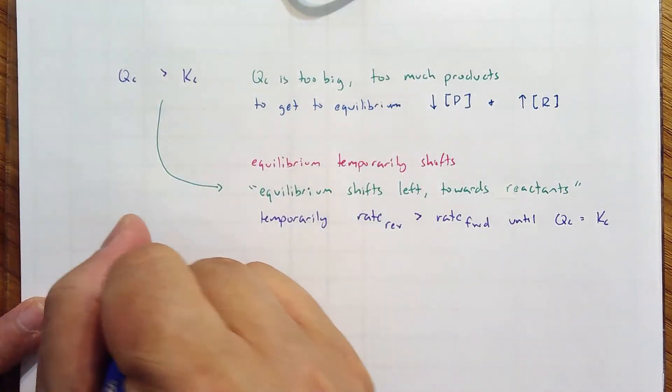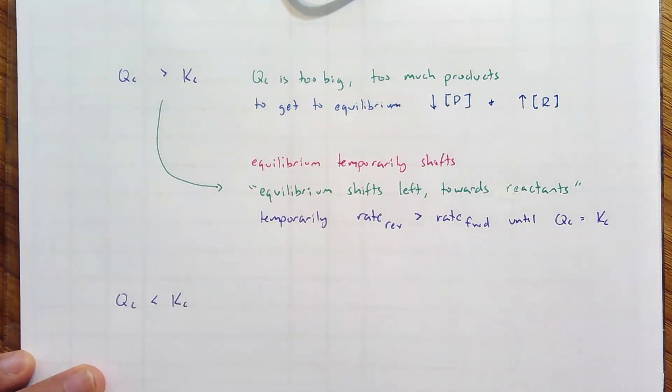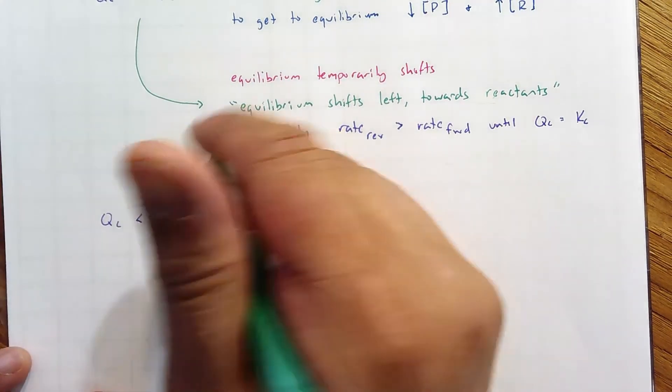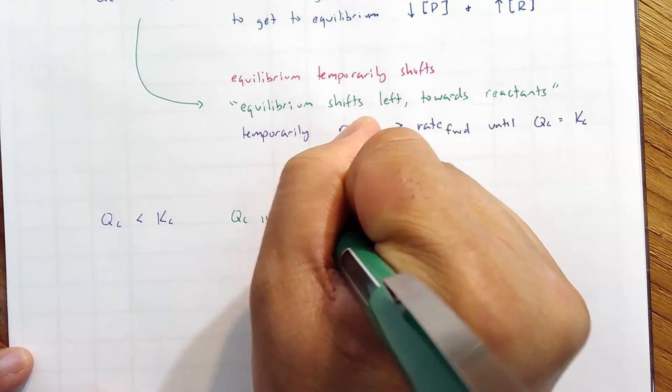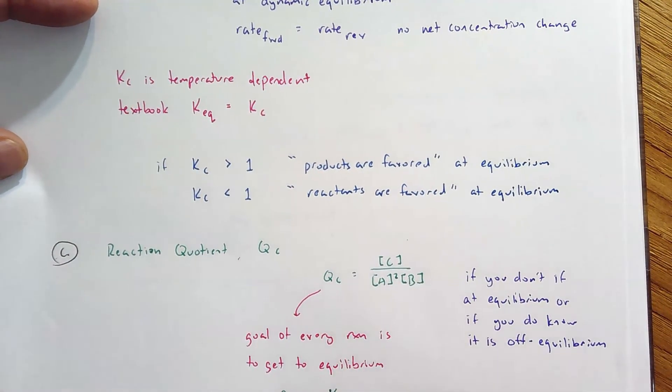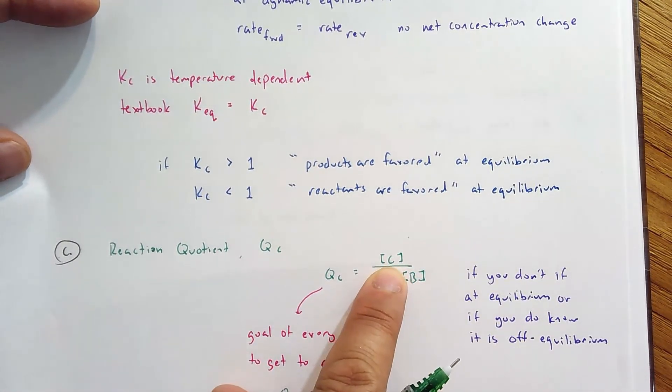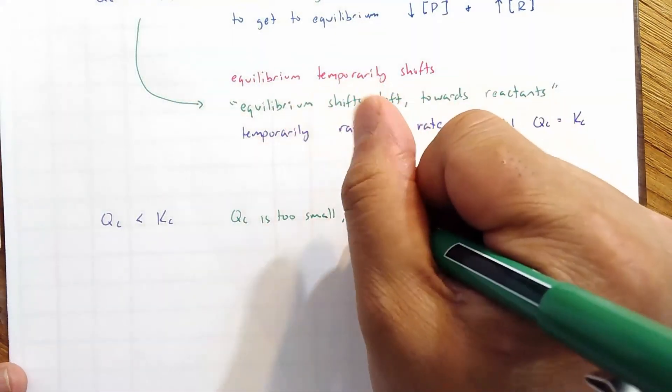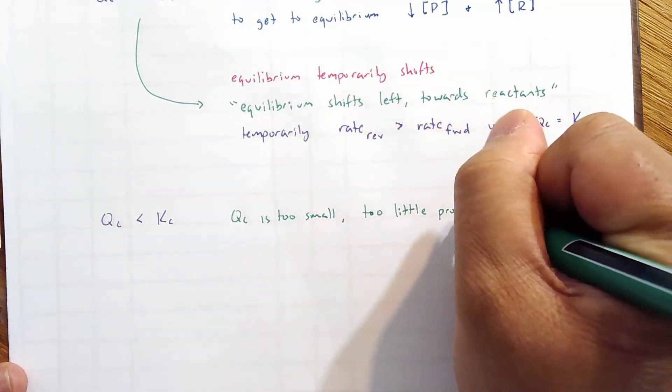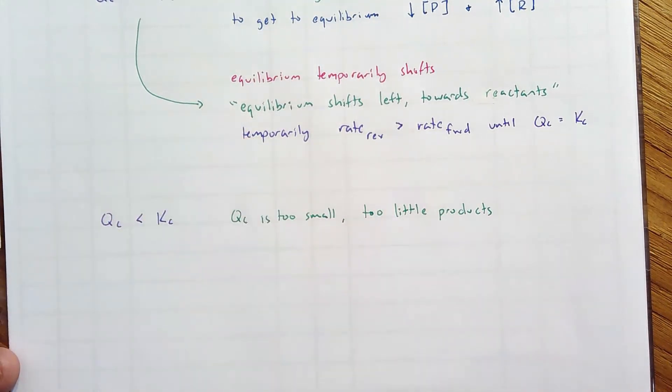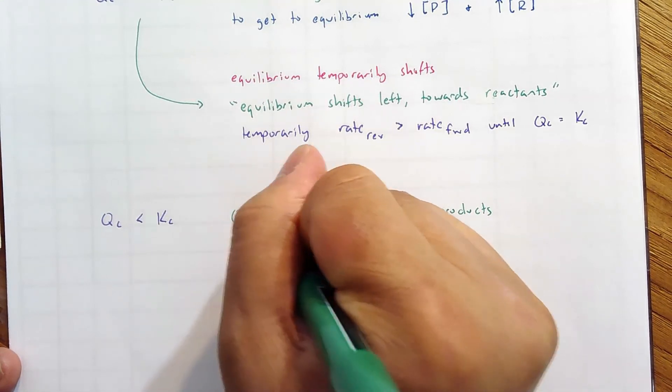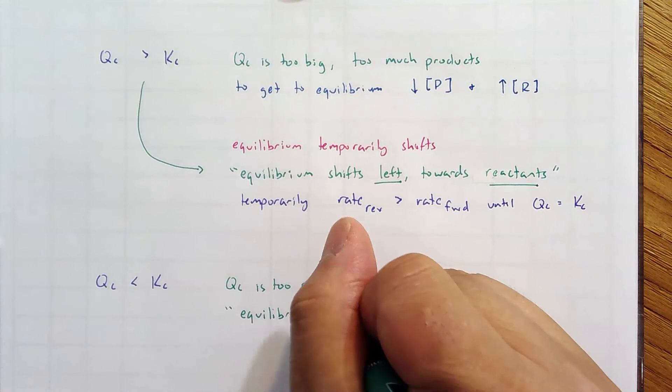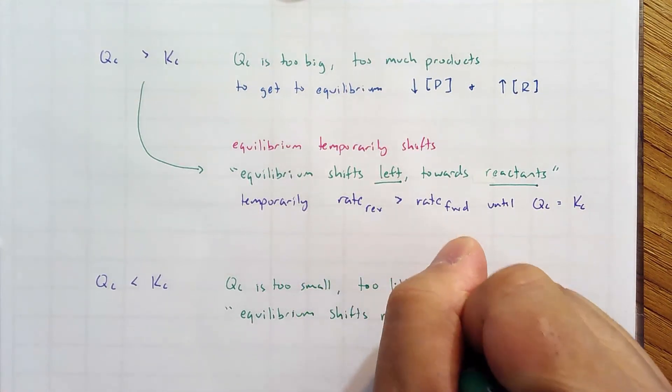Can we do the opposite? Qc is less than Kc. That means Qc is too small. Too small, and we've got to make Qc bigger to get it to be equal to Kc. Well, if Qc is too small, to get it larger, we've got to increase the numerator and decrease the denominator to get Qc to increase. So here we have too little products. The numerator is too small. So we're going to say our conclusion is equilibrium shifts right towards products.